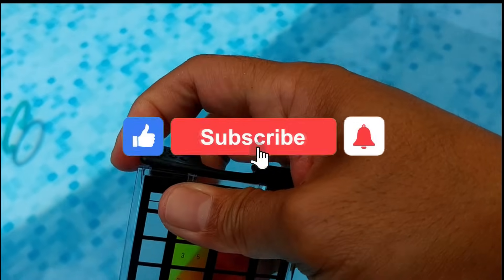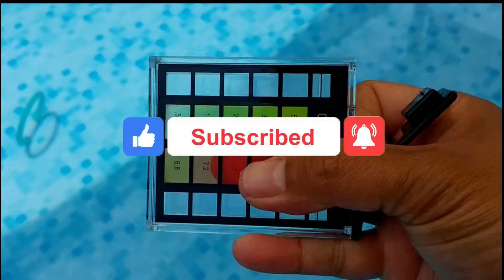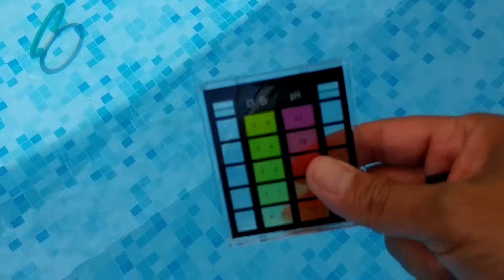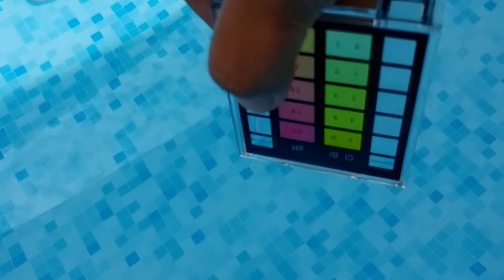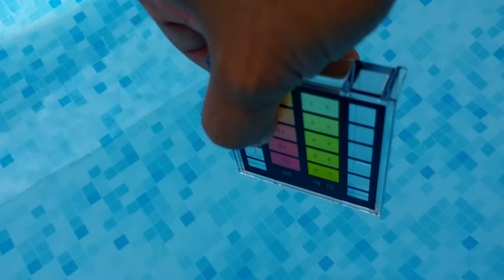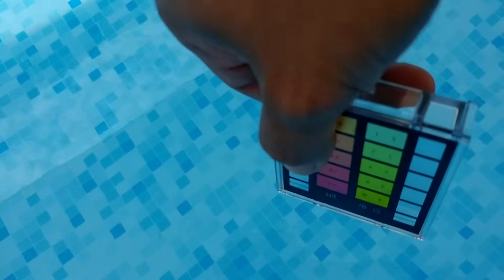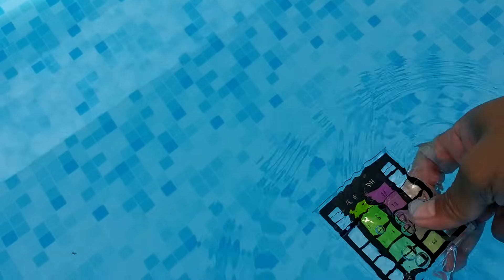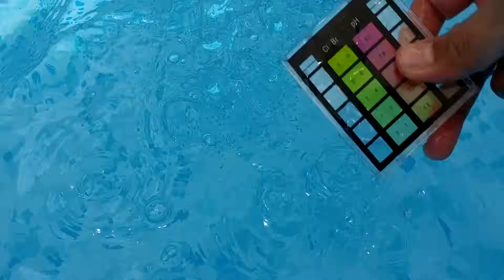To get the water sample, you want to dip this upside down to create an air bubble at least 18 inches under the water or at least elbow length. So what I'll do first is go ahead and clean it up. Okay, now I'm gonna get my sample.